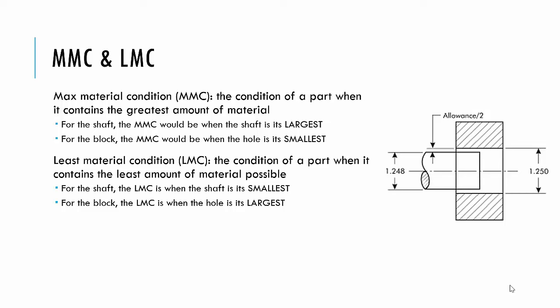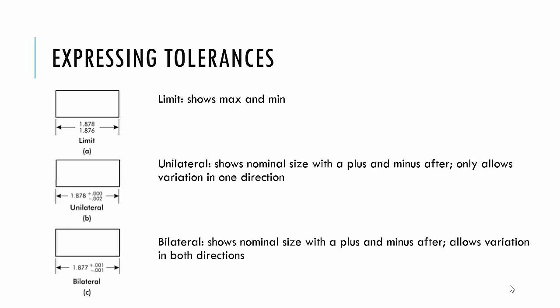So the least material condition of a part would be when it contains the least amount of material. For the shaft, it would be when it's its smallest. For the block, it would be when the hole is the largest. That would be when you'd remove the most material.